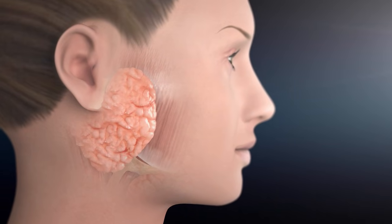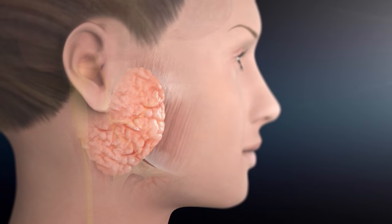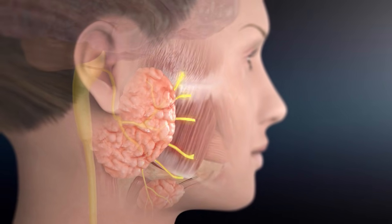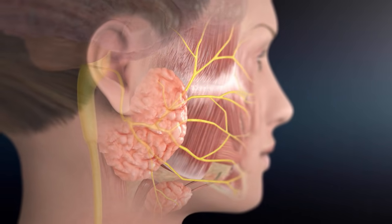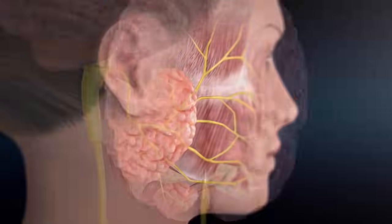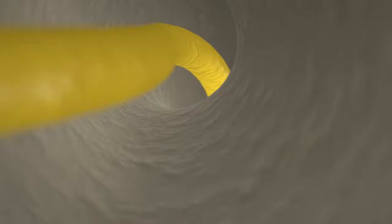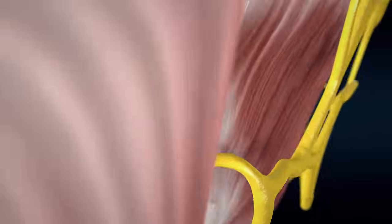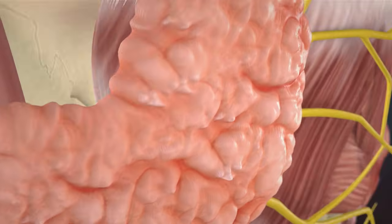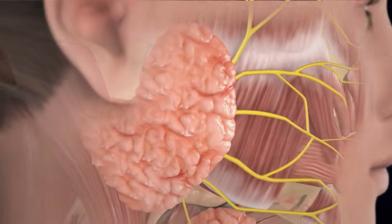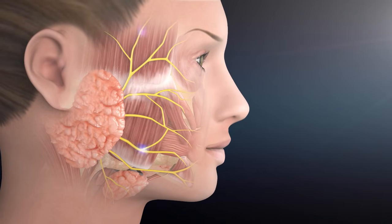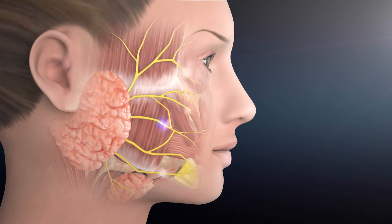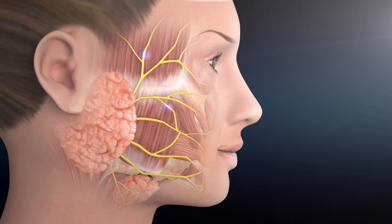The parotid is the largest salivary gland and has an intimate relationship with the facial nerve. The facial nerve starts from the brain, travels in a long bony canal before coming out of the skull and passing through the parotid gland to get to the muscles of the face, thus controlling facial movement and expression.